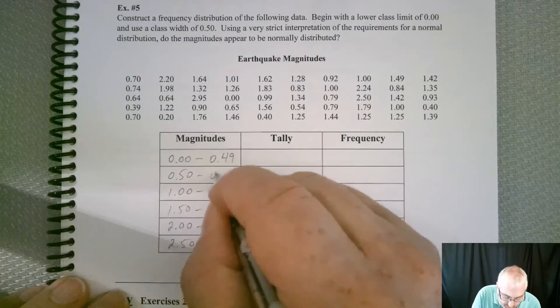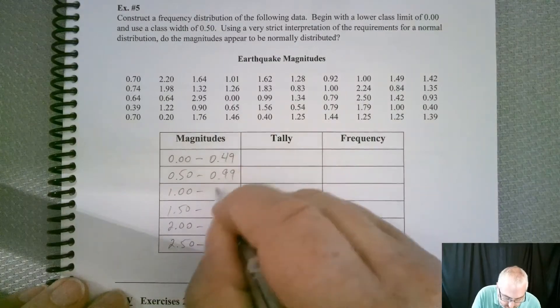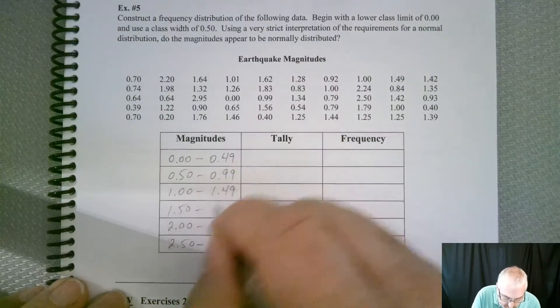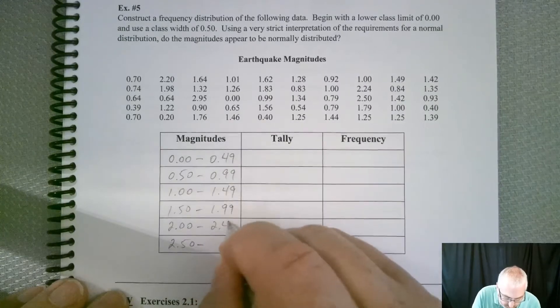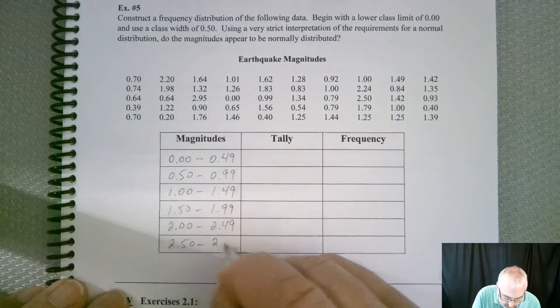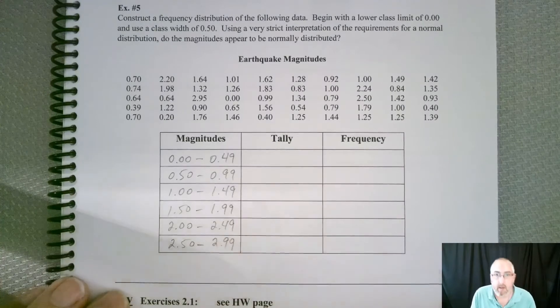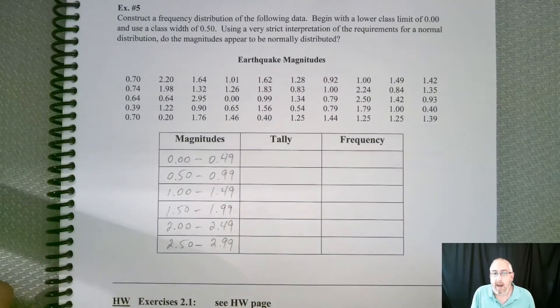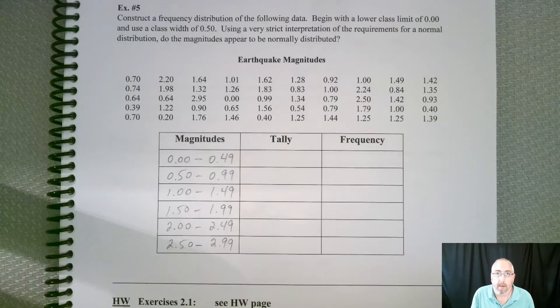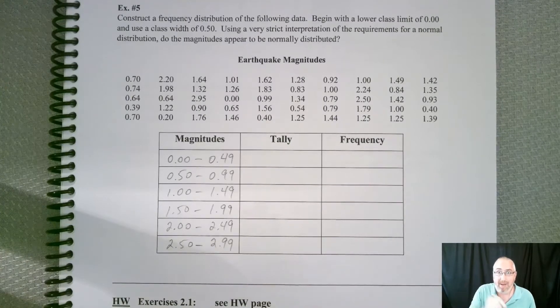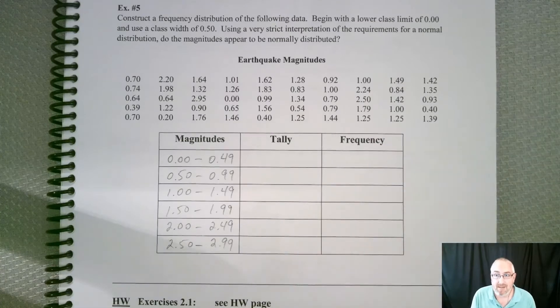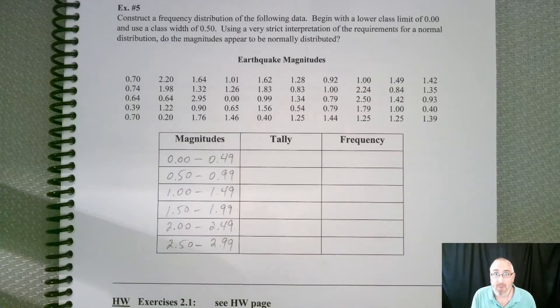So 0.99, 1.49, 1.99, 2.49, and then 2.99. So again, not terrible. But now comes the tedious part. So we're going to go through and put all those in the right spots. So guess what? We're going to jump right to it.